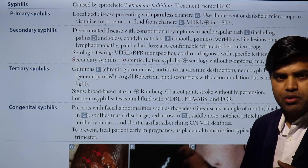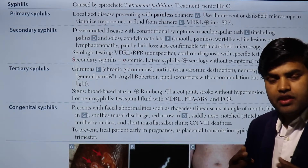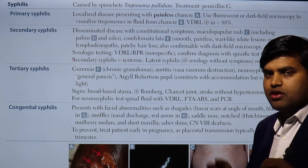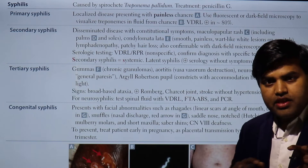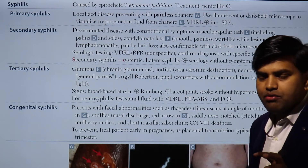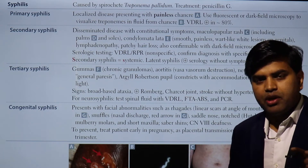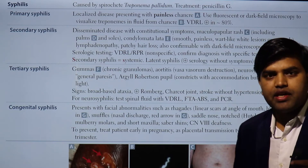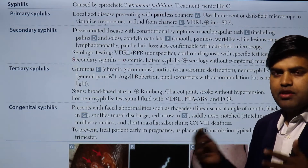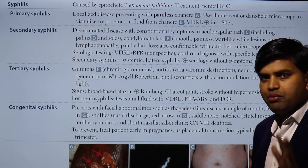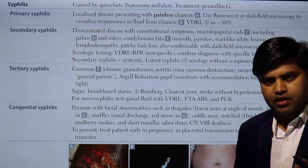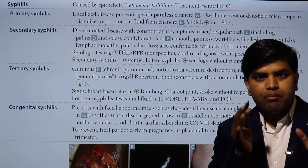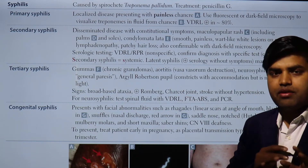Non-treponemal tests are non-specific tests. They are not actually targeting the bacteria; they measure by-products. When the bacteria enters your body there is inflammation, damage of cells, and other changes — and that measurement is indirect evidence of Treponema pallidum infection. These tests include VDRL and RPR.